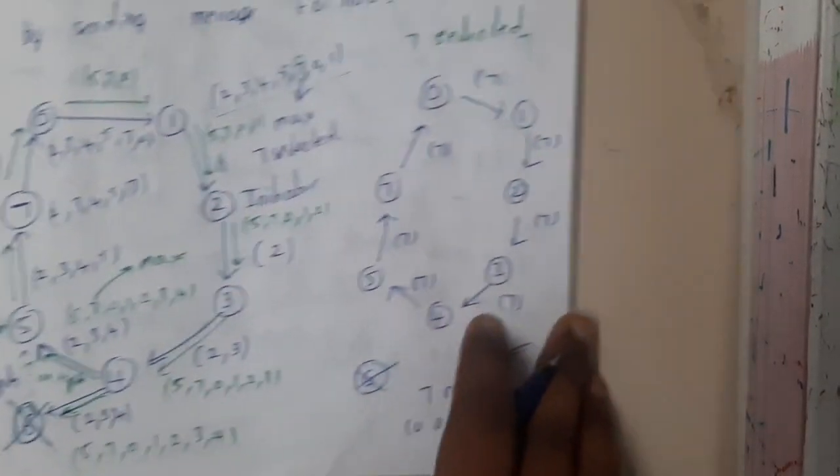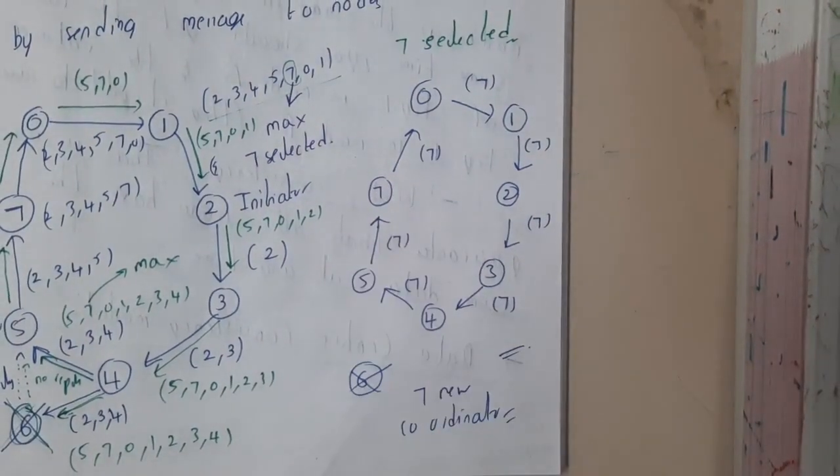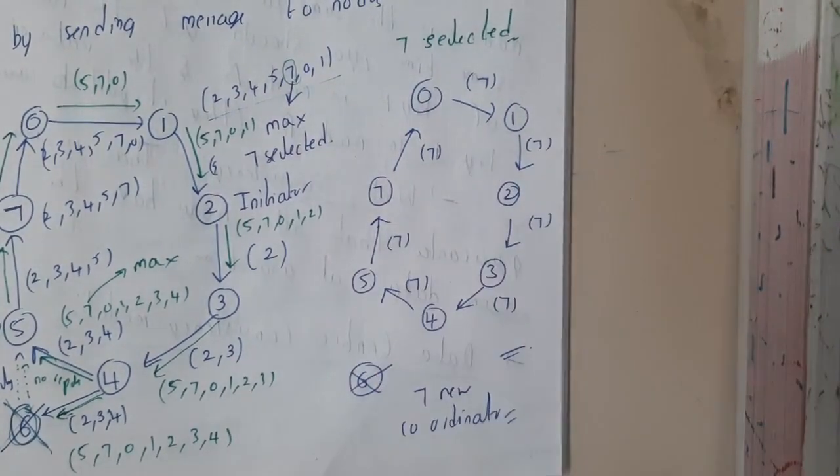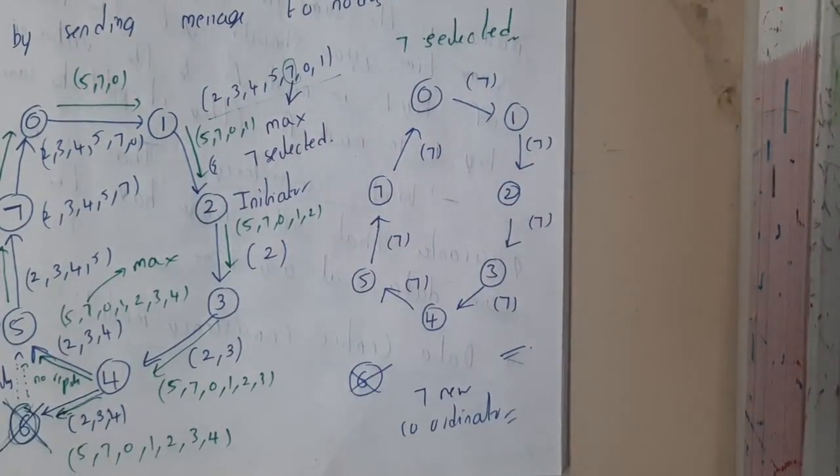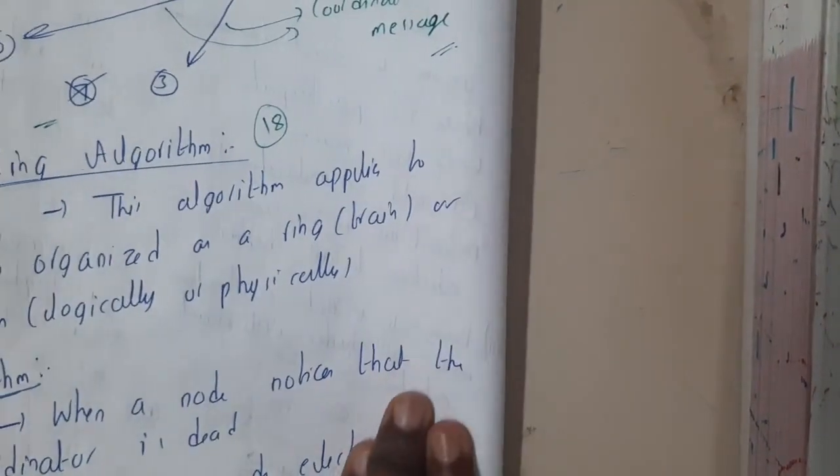At the end, seven got the leadership. So five and two will be intimating everyone that seven is the new leader. That is the concept of ring algorithm. Now let us go through the theory.